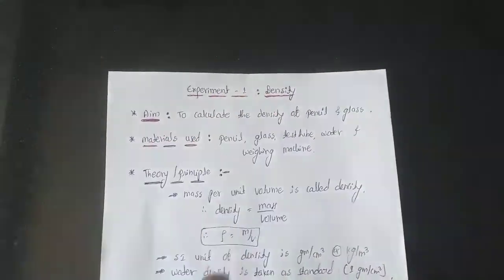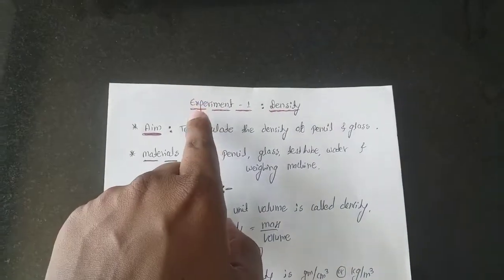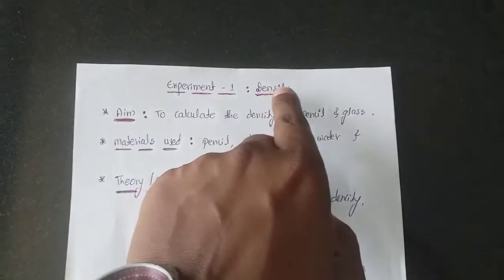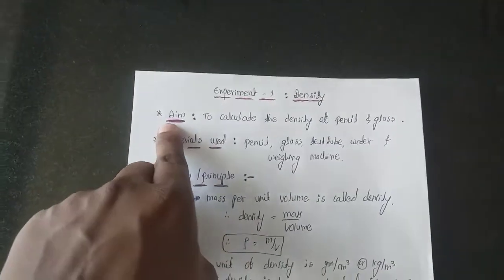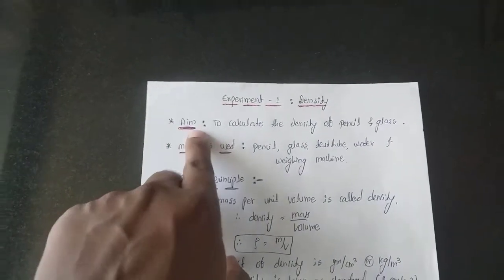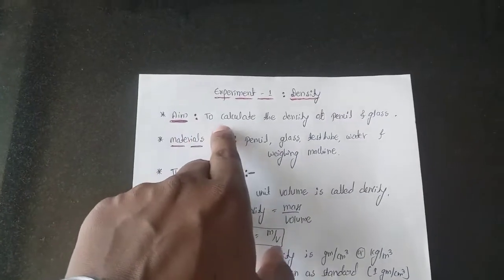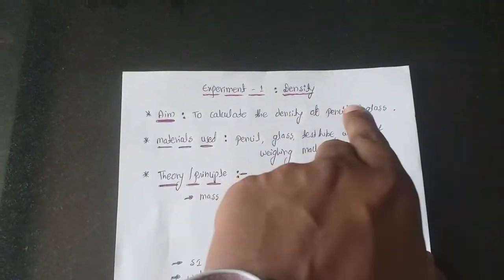Here the experiment taken is density experiment, so I have written experiment number one: density. First point you have to mention is aim, aim of the experiment. Here the experiment aim is to calculate the density of the pencil and the glass.